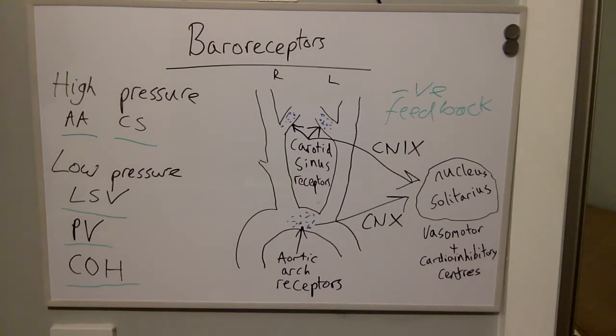This means there is reduced transmission along cranial nerves 9 and 10, and as a result there is increased sympathetic outflow and reduced parasympathetic activity from the vasomotor and cardioinhibitory centres. This in turn will result in an increase in systemic vascular resistance and an increase in blood pressure.